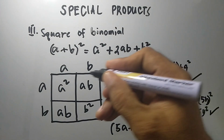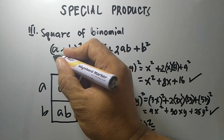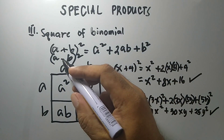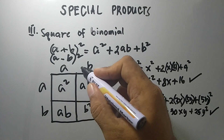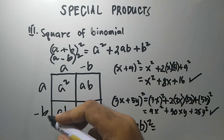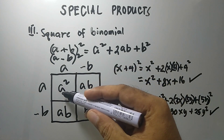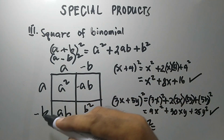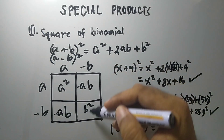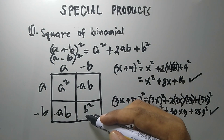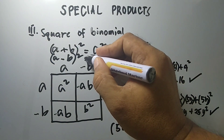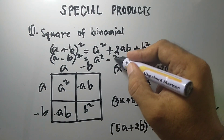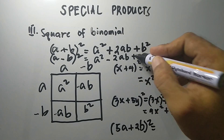There is also the square of a binomial with a negative in the middle. For example, (a minus b) squared. To expand this, we multiply (a minus b) times (a minus b). We get: a times a is a squared; a times negative b is negative ab; negative b times a is also negative ab; and negative b times negative b is positive b squared. Our product is a squared minus 2ab plus b squared.